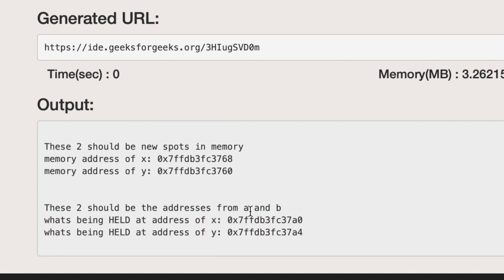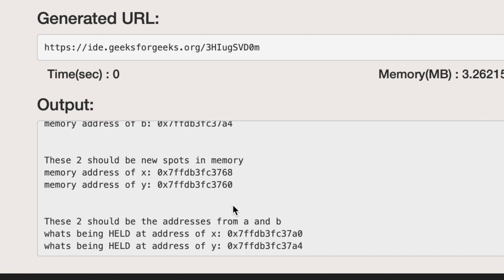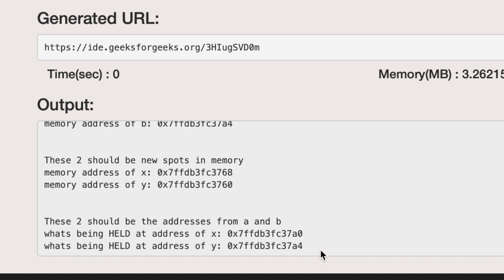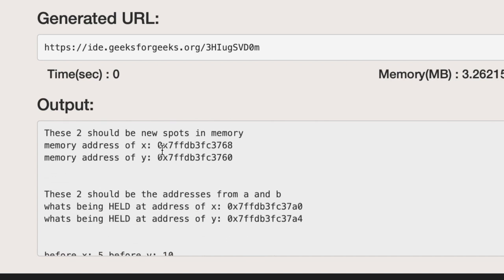Then we have what's actually being held at x and y. As you can see 0 and 4 correspond to a and b. We wanted x and y to hold a and b so we know that these variables are holding memory addresses, so that all looks good.